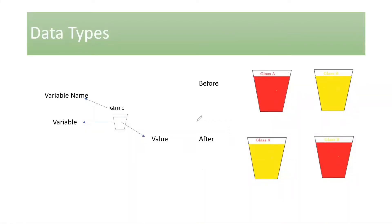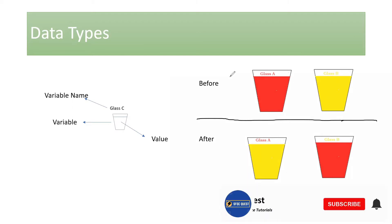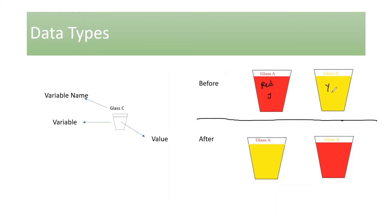We'll go through the same puzzle once again but with a different twist this time. I'll give you a setup so you can understand the difference between the previous puzzle and this one. We have glass A which has red juice in it and glass B which has yellow juice. The goal is to interchange the liquids — in glass A I want the yellow juice, and in glass B I want the red juice.